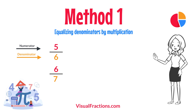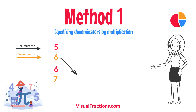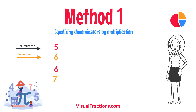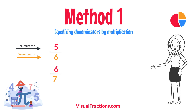First, let's equalize the denominators by multiplying each fraction's numerator and denominator by the other fraction's denominator. This method works by using the denominators of each fraction to create a common denominator, allowing us to compare the fractions directly.